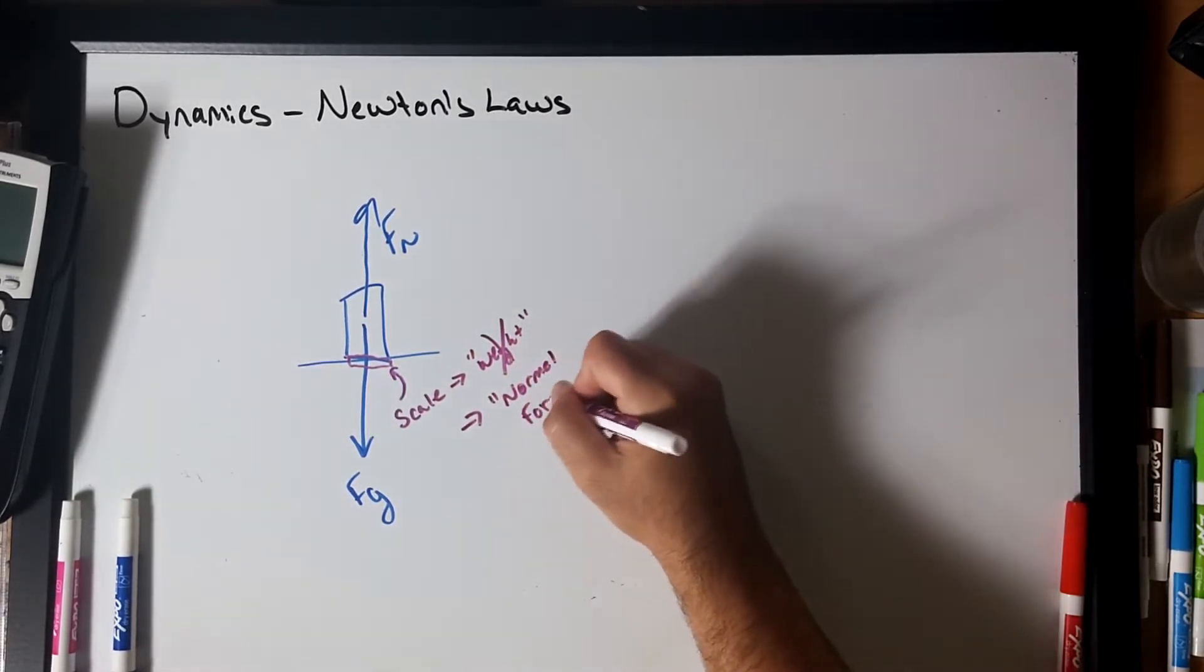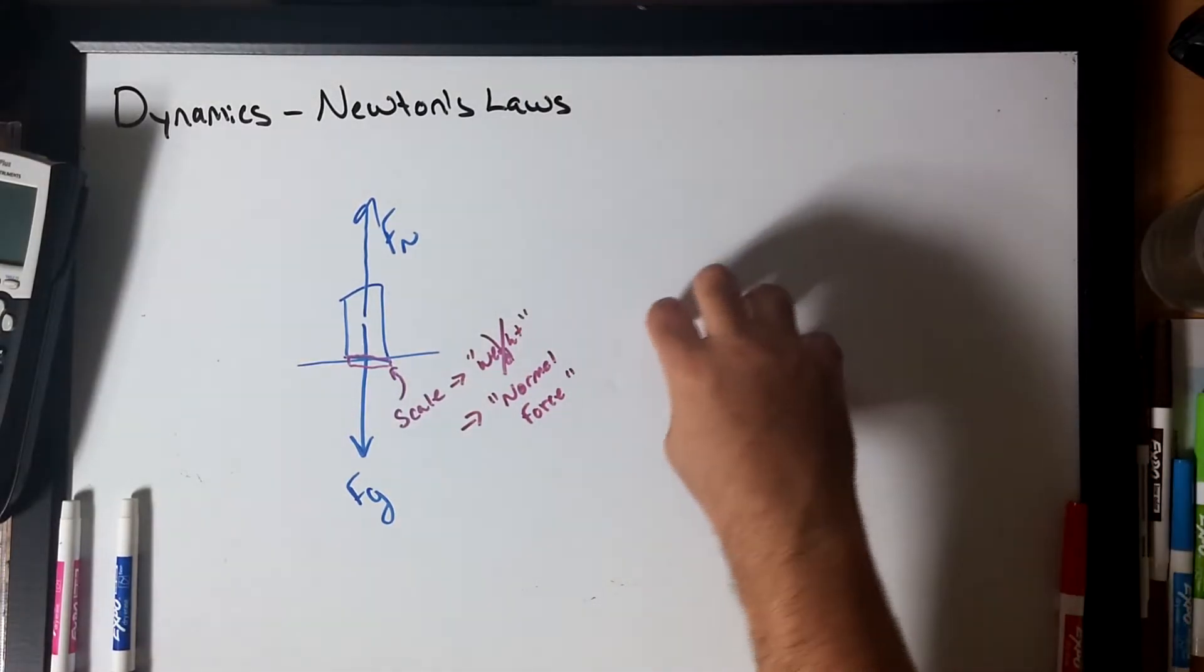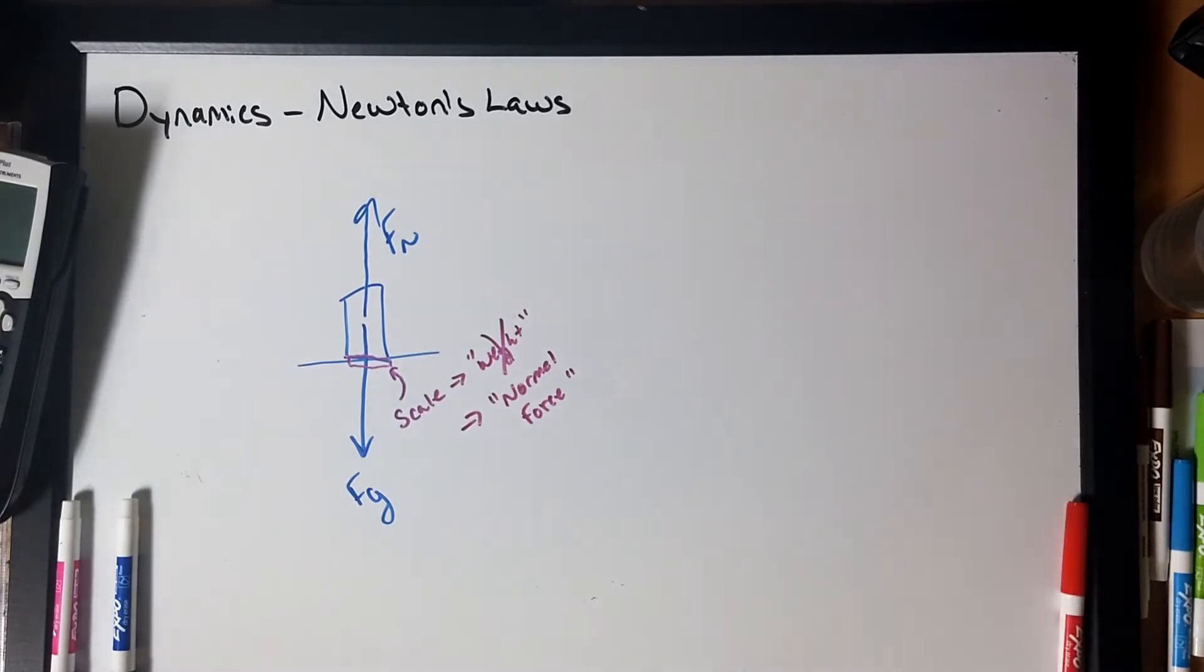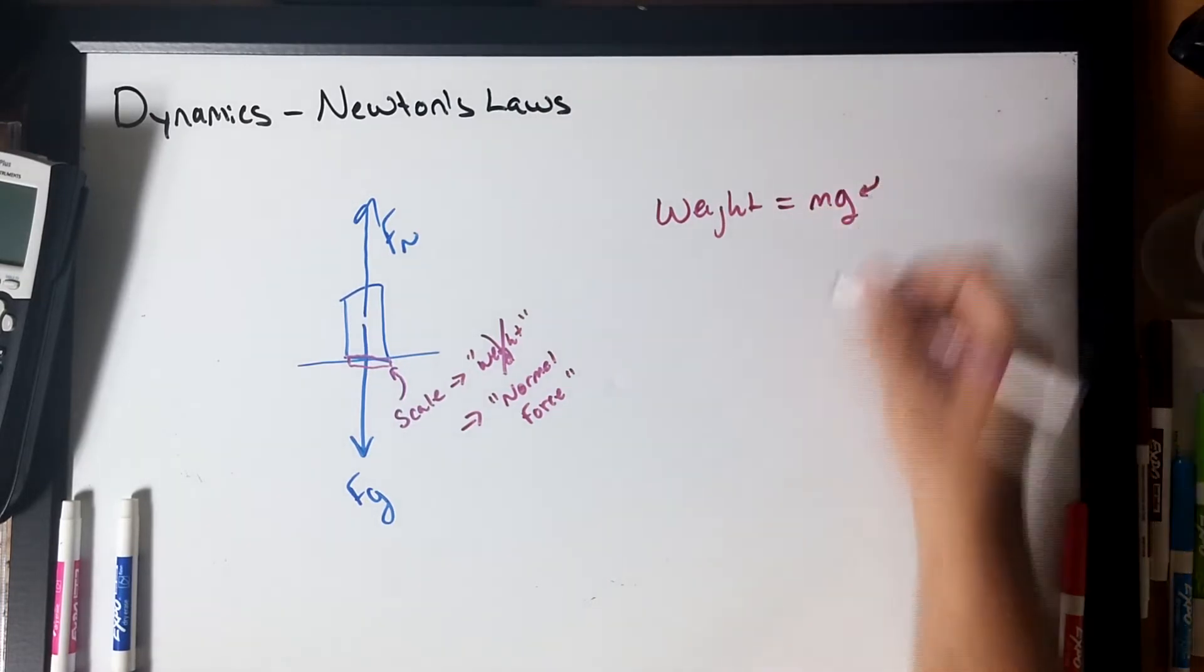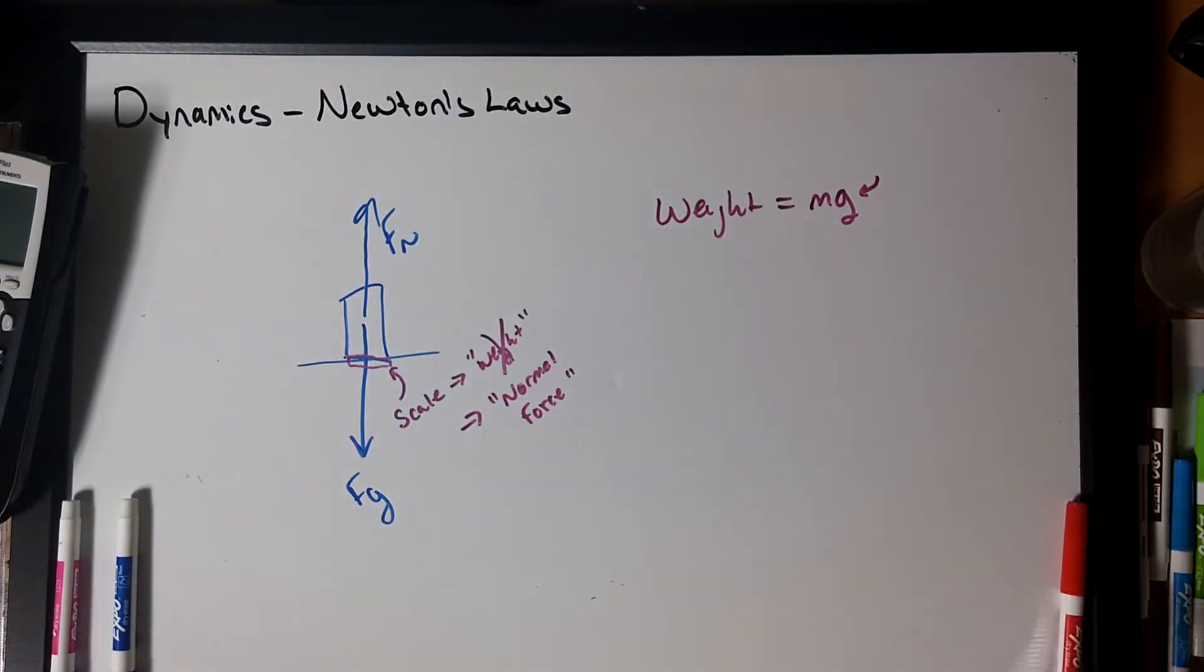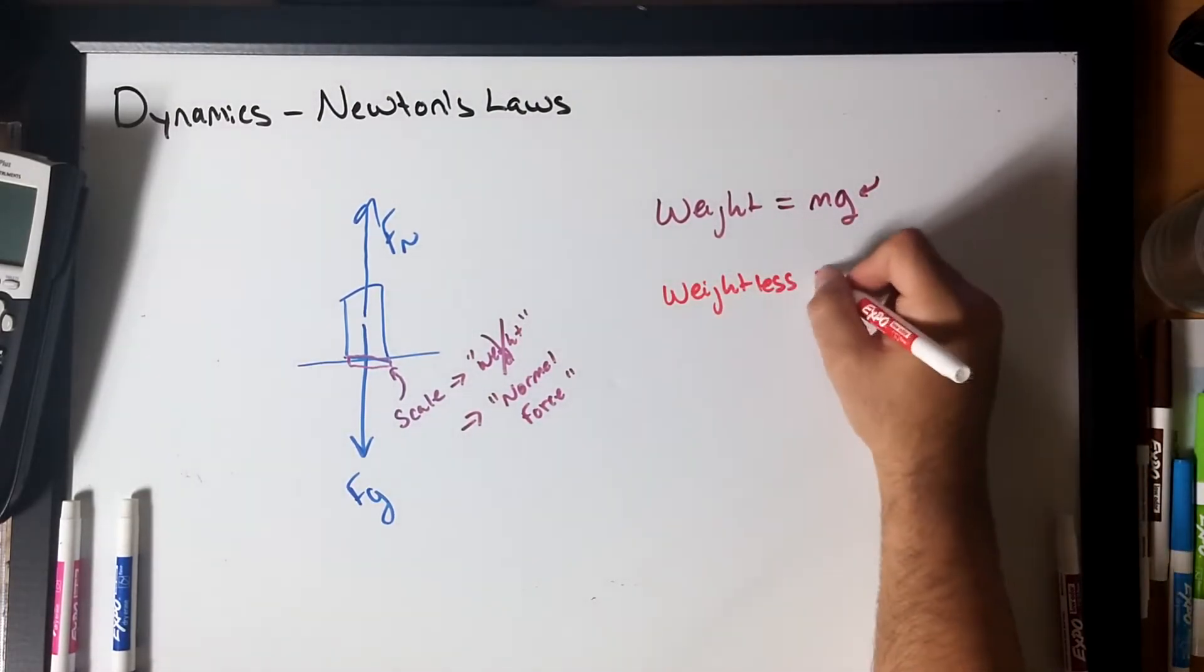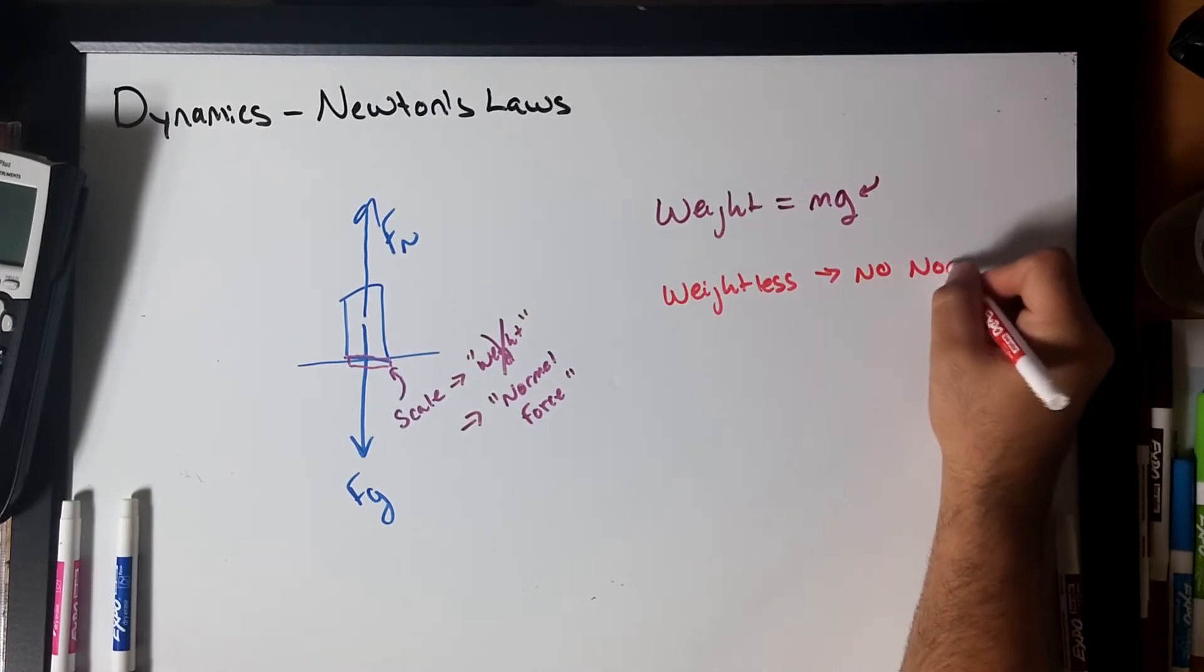In fact, our own ability to determine whether or not we are experiencing weight is our own natural ability to detect the normal force acting on us. You've heard these concepts of weightless, right? Well, let me tell you this. There's no such thing as weightless. There's always, everywhere in this universe, some level of gravity acting on you. Remember, weight equals mg. So when we talk about weightless, we're talking about the apparent loss of the normal force. So it's really no, not no gravity, but no normal force.